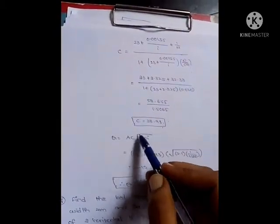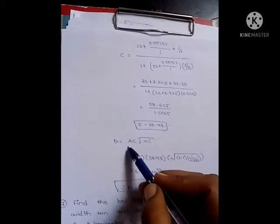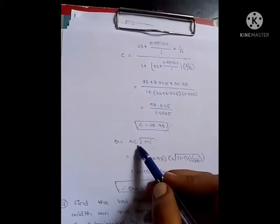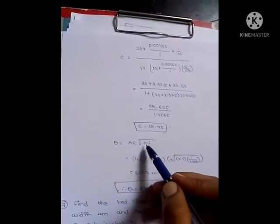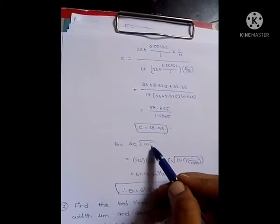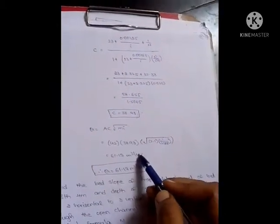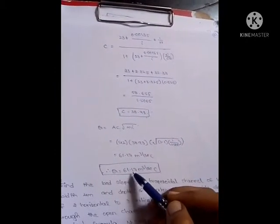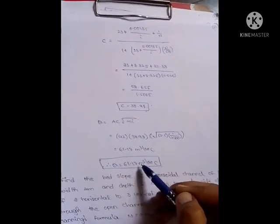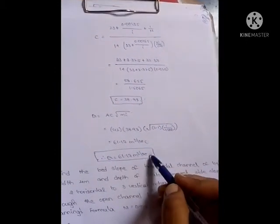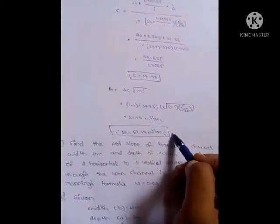Now discharge Q equals A·C·√(m·i). Substituting area, C value of 38.93, m, and i, the discharge Q equals 61.17 meter cube per second.